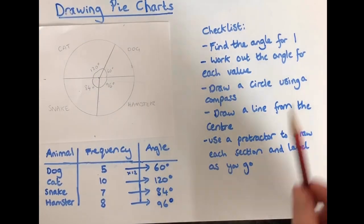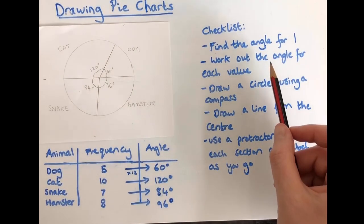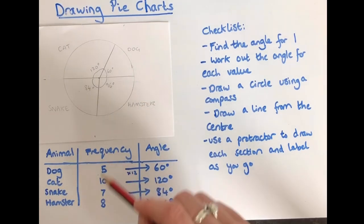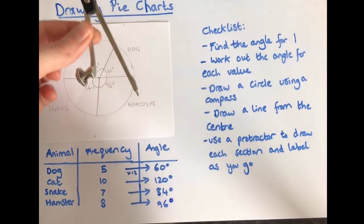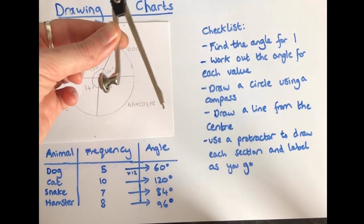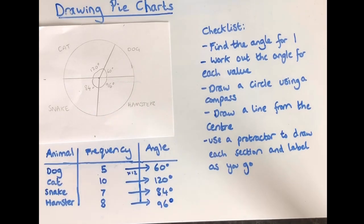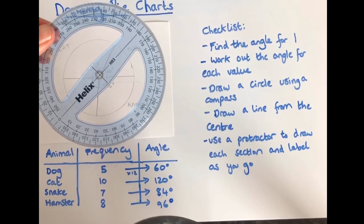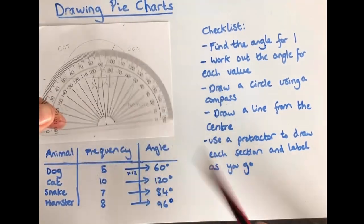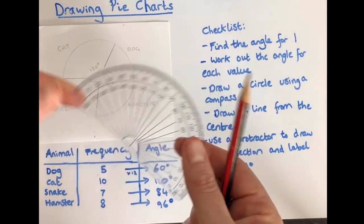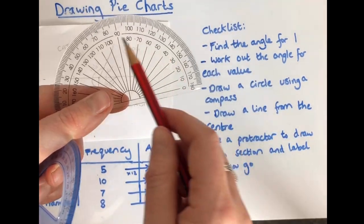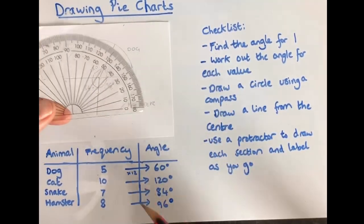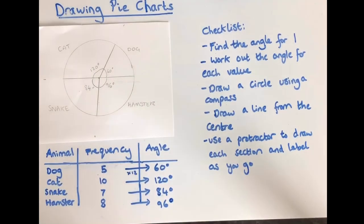So remember we started off finding the angle for one which was 12. Then we worked out the angle for each of the values, each of the frequencies. Then we drew a circle using our compass. Then we drew a line from the centre. And we used a protractor. And you can use any sort of protractor you have. I have a full protractor and a half protractor. I used a half protractor today. Just make sure you're carefully using either the zero on this side or the zero on this side. Just be careful which measurement you've decided to use, the inner or the outer layer. And carefully measure them and draw them out. Remembering to label each section as you go. Good luck drawing your pie charts.